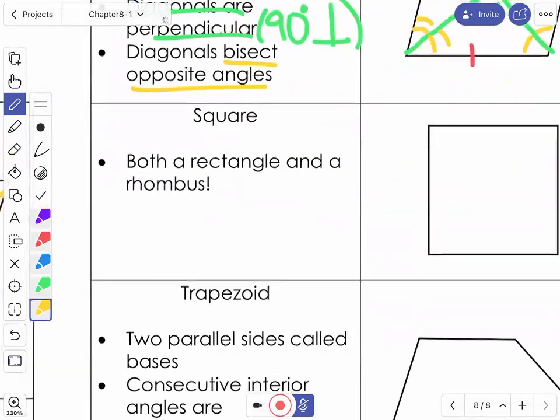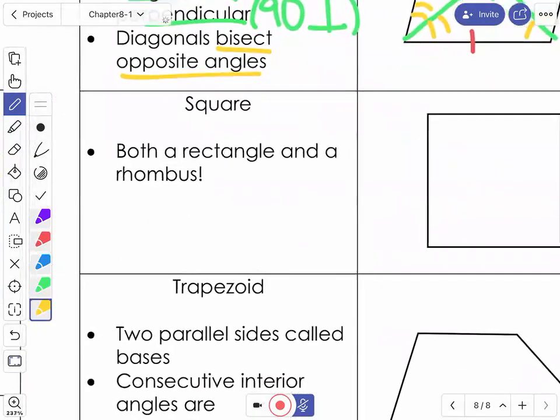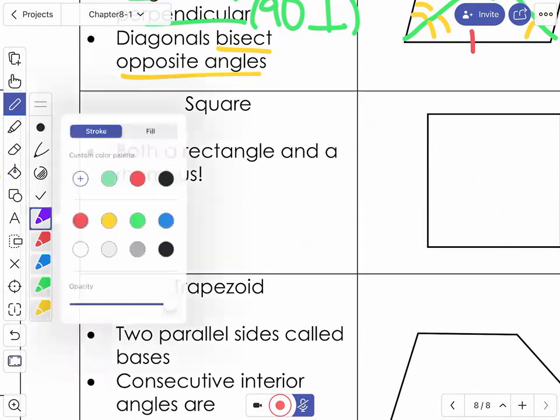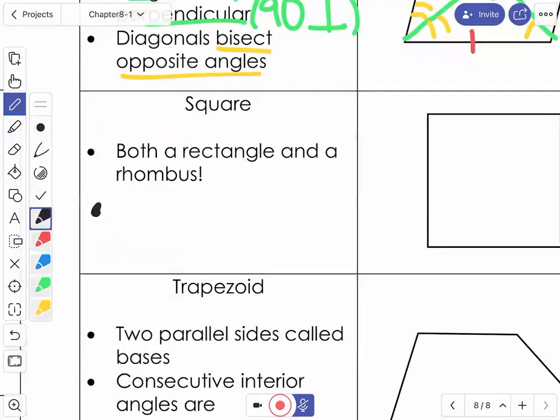When we take everything from the parallelogram rectangle and rhombus, that's when we get the square. So it is both a rectangle and a rhombus. But it's also, again, because it's a rectangle and the rhombus, it's also parallelogram properties are going to work here as well.